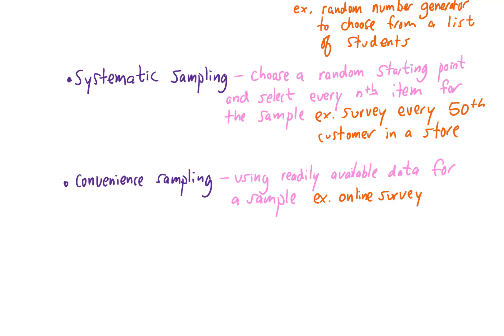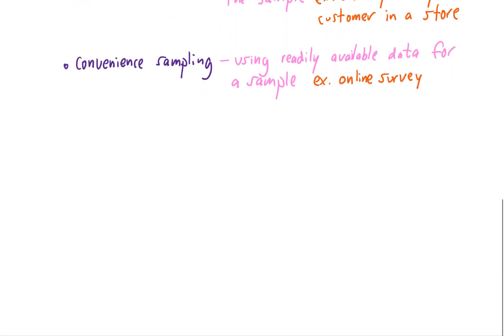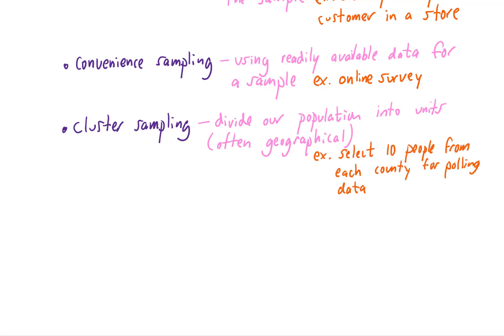Our last two sampling techniques are pretty easily confused. One is called cluster sampling and in a cluster sample we divide our population into units, which is often done geographically. Then we take a random sample from each one of those units or we use one entire unit as our sample. An example here would be selecting, say, 10 people from each county in a state to collect polling data. A non-geographical example would be from all the boxes of screws that a manufacturer makes. Select one box and test every single screw in that box for defects. That would be considered to be a cluster sample.